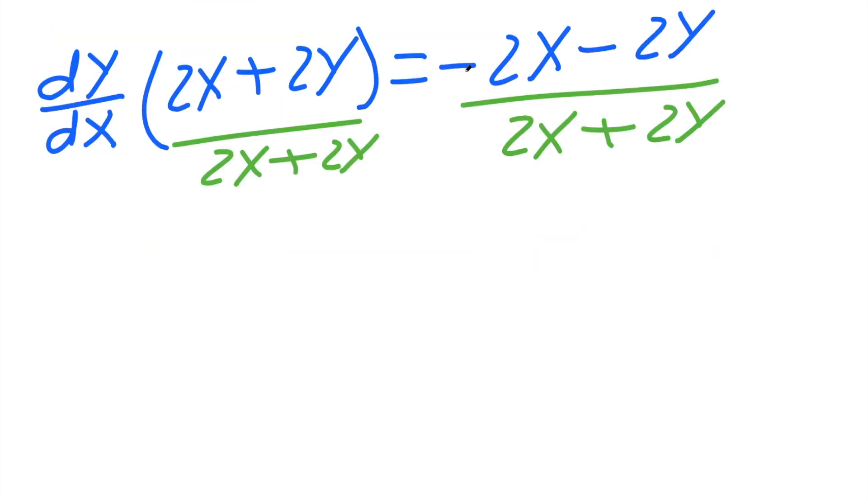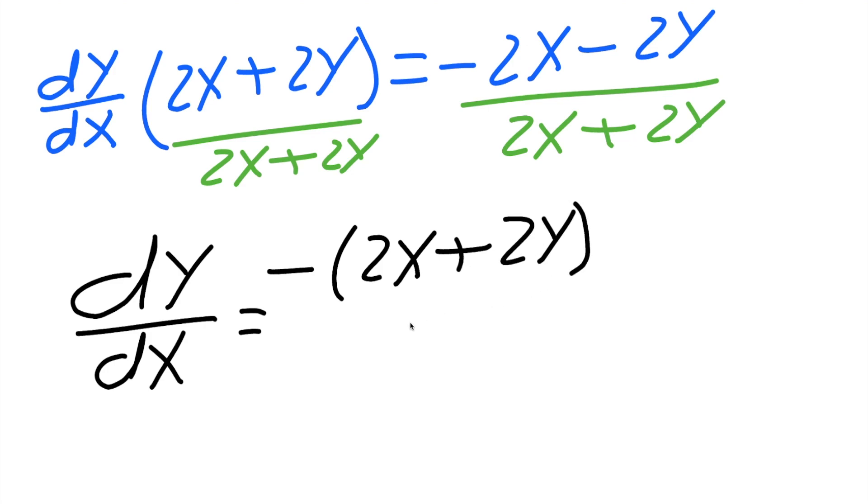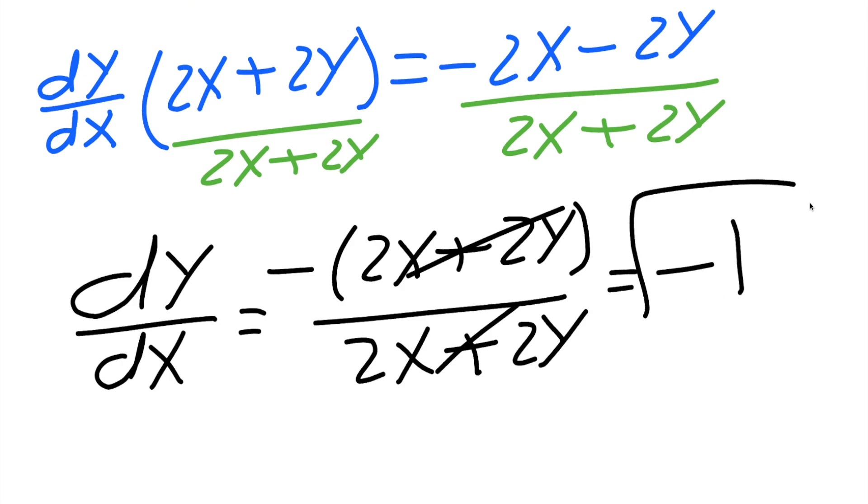Now this is negative, so we could factor out a negative, and we would get dy/dx = -(2x + 2y)/(2x + 2y). And we notice the numerator and denominator are the same except for this negative. So they cancel, and when they cancel, it's 1. So our final answer for this problem would be -1. Also, check out the description box for more problems.